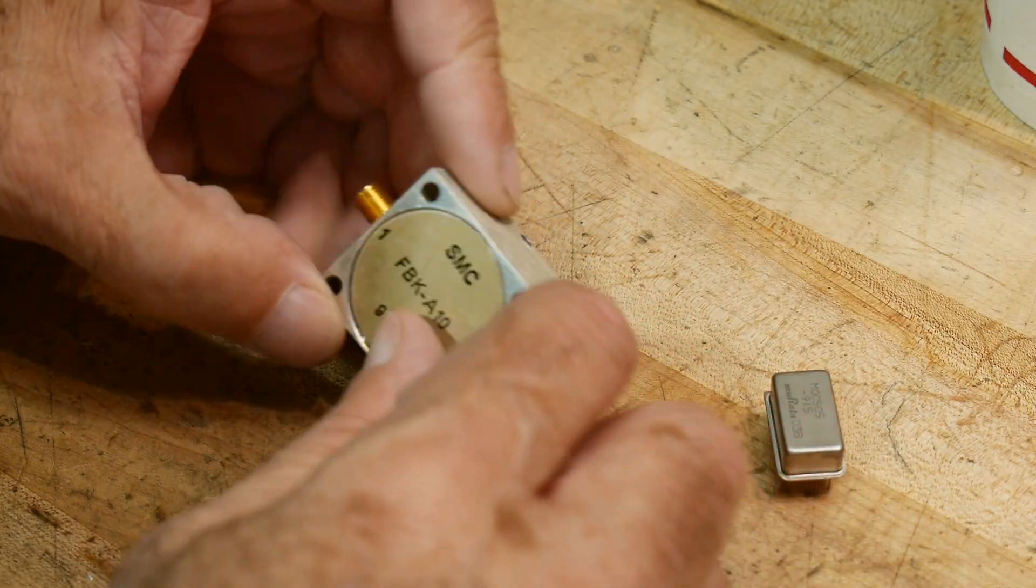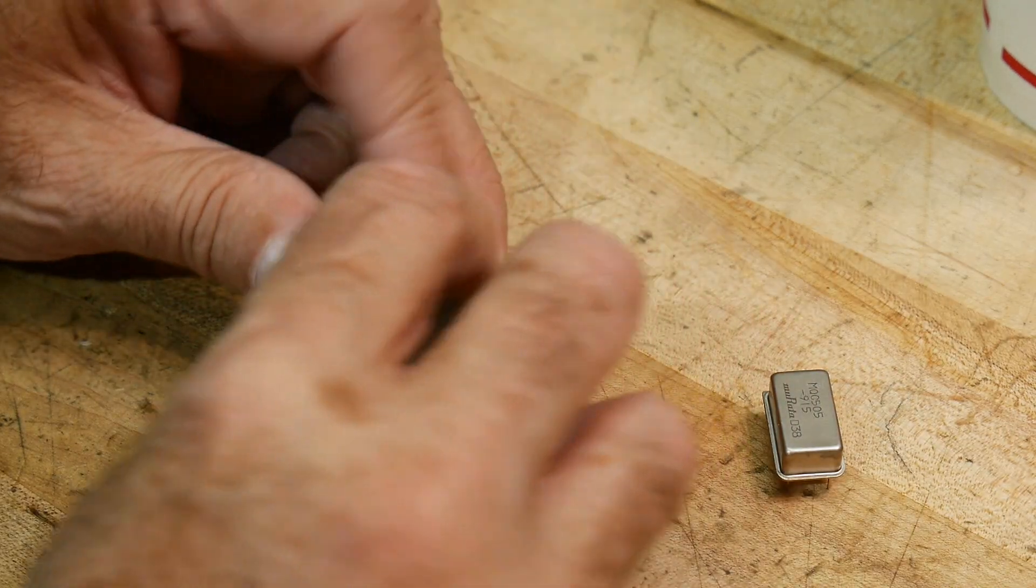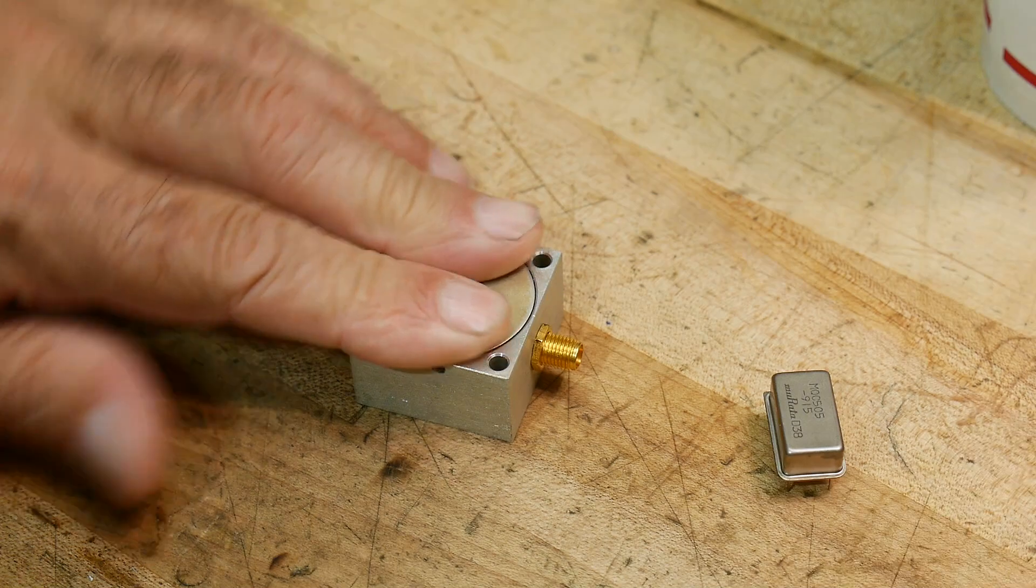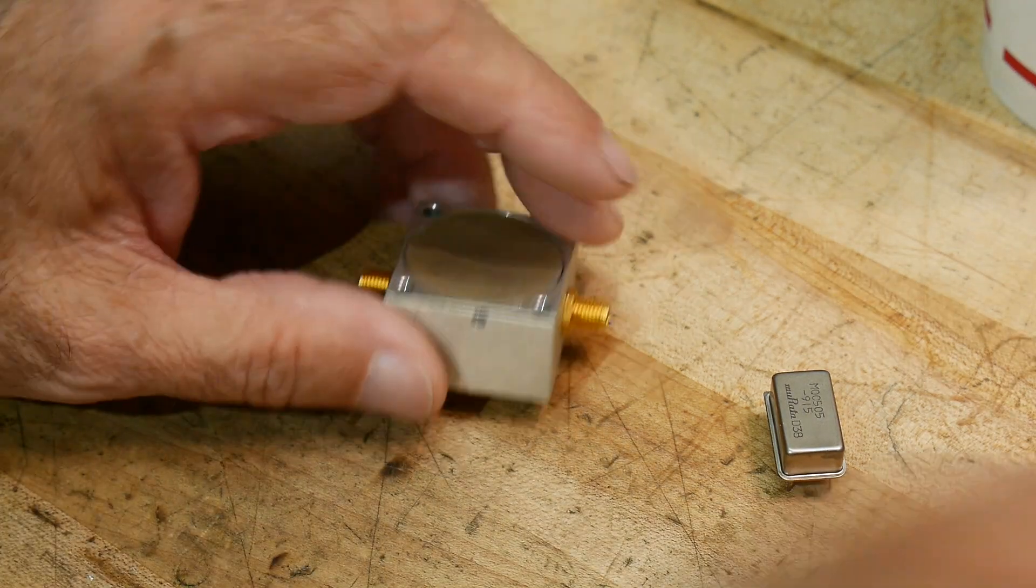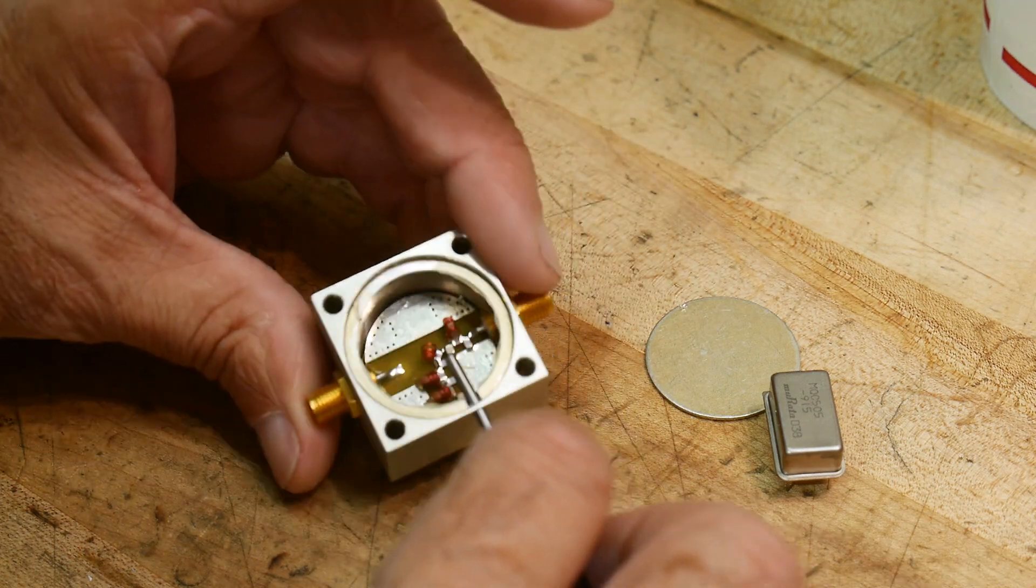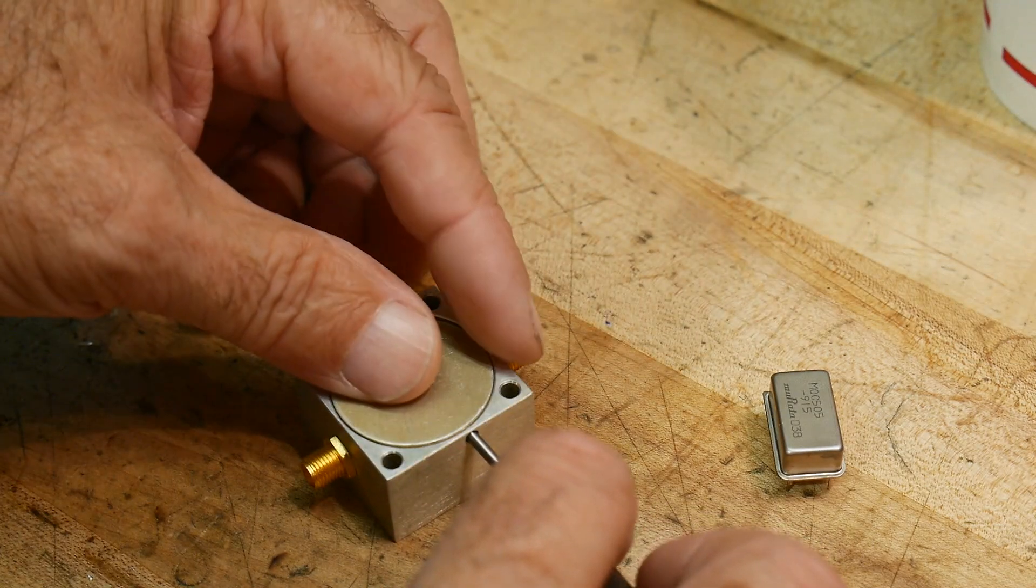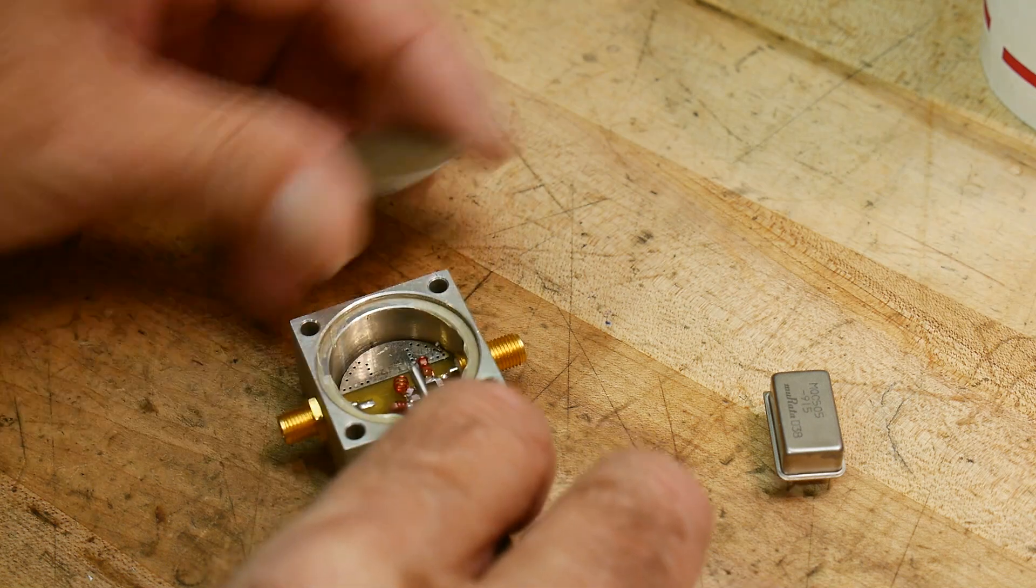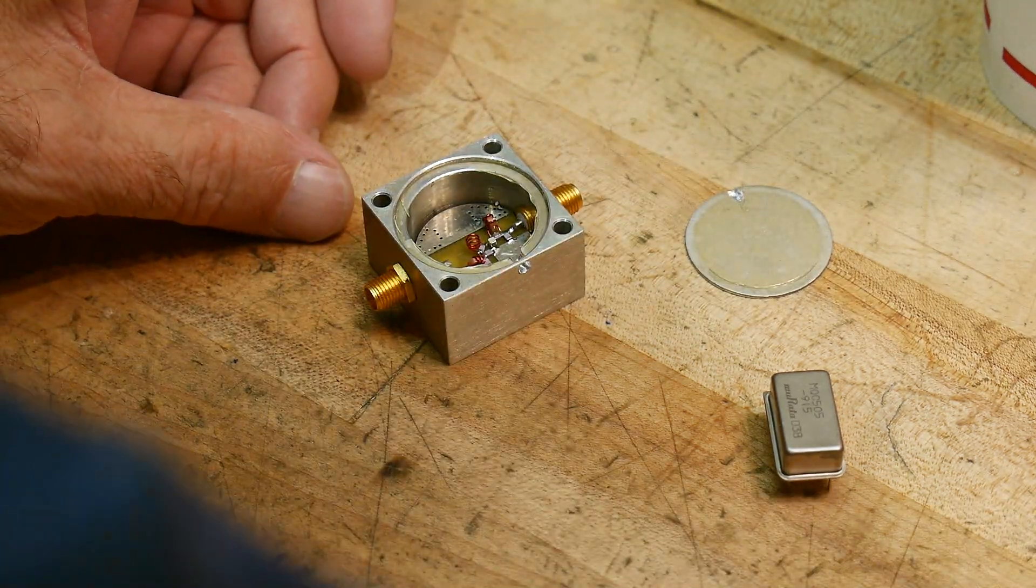So I have a... These tops are hard to get off, so I've put a hole in here, and that allows me to put something under the lid and then lever it up. So that's how I got the top off, alright.